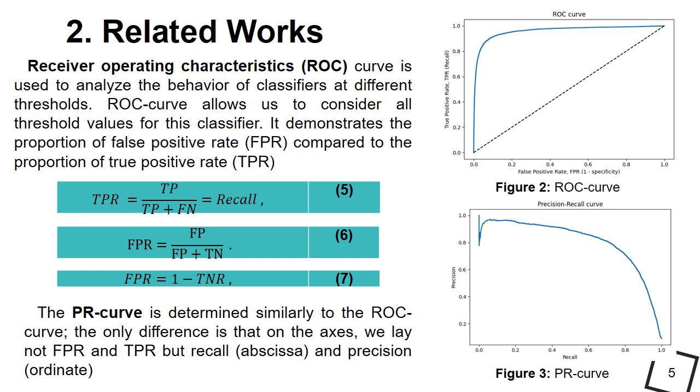The precision-recall curve demonstrates the sensitivity of the ratio of classes. If the positive class is significantly smaller, the ROC curve may provide an underquired estimate of the algorithm quality.